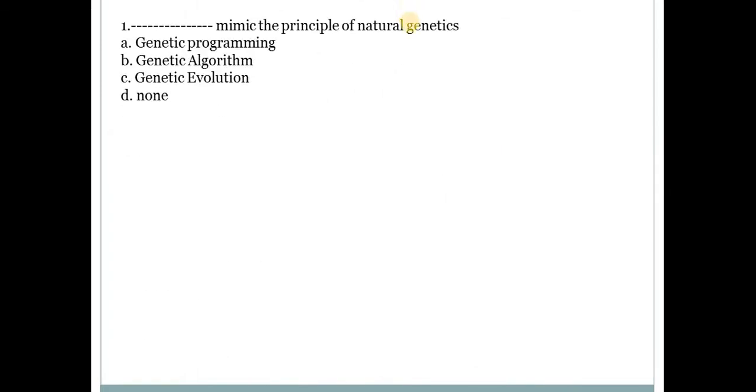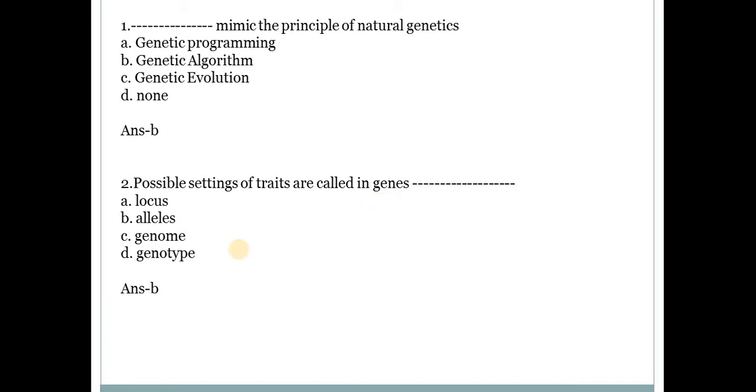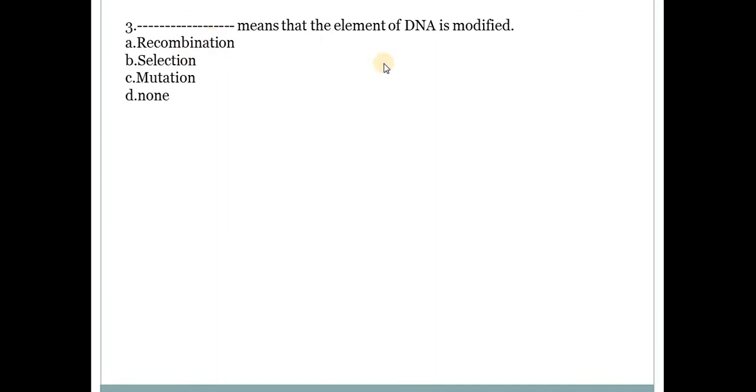First one is which of the following mimic the principle of natural genetics? Answer is B, that is genetic algorithms. Next is possible settings for triads are called in genes. Answer is B, alleles. What means that the element of DNA is modified? Answer is C, mutation. Mutation deals with modification of DNA.